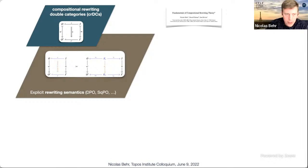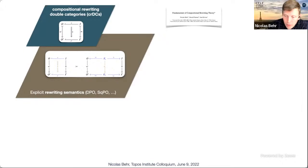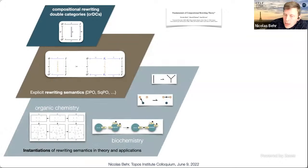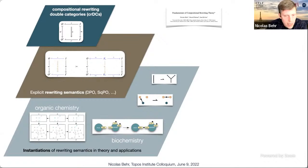These new structures called compositional rewriting double categories allow you to directly verify that a particular semantics is compositional. There's a way of demonstrating that double pushout and SqPO rewriting give instances of such double categories, but now the burden is much lighter — given a type of semantics, you can more easily show it gives rise to compositional rewriting double categories. That is the main technical advantage.